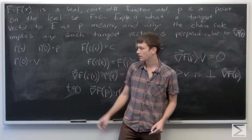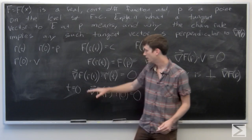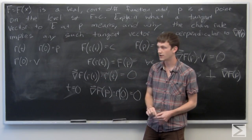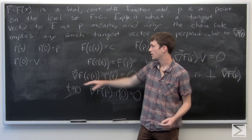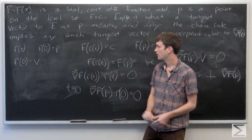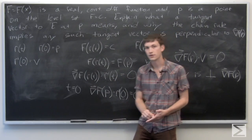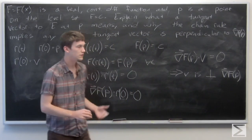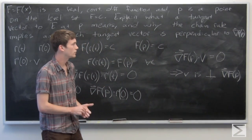So we now know how the chain rule comes into effect in order to show that the tangent vector is perpendicular to the gradient vector of f at p.